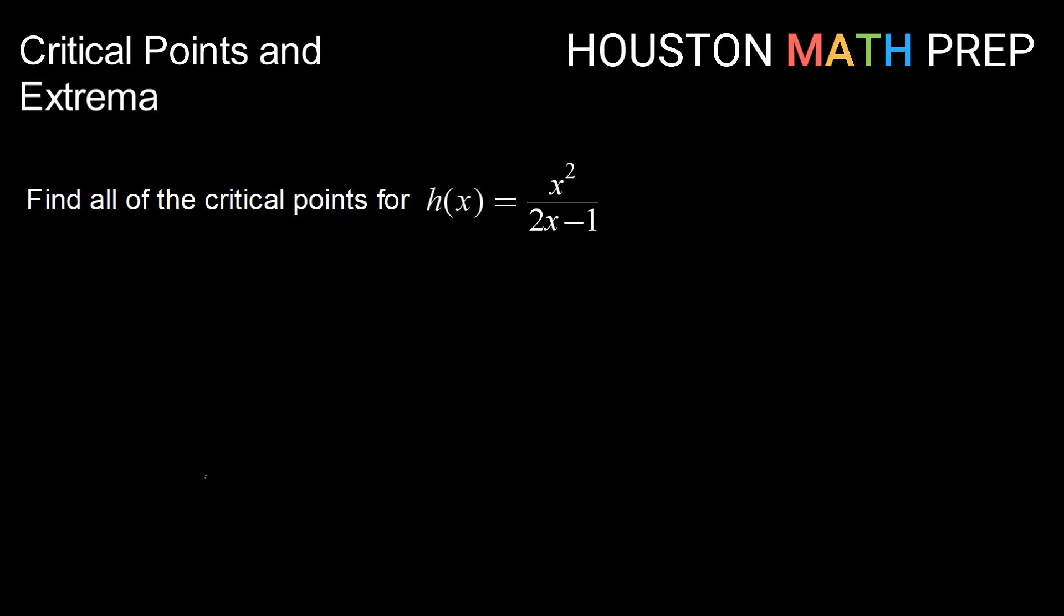Okay, taking a look at our next example, to find all critical points of the function h of x equals x squared divided by 2x minus 1, we'll need to start by finding our first derivative.